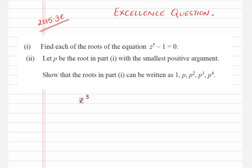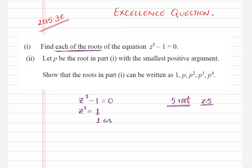So the first part says z to the power of 5 minus 1 equals 0, and we have to find each root. We will have five roots because the highest power of z is 5. We can write it as z⁵ equals 1. Since 1 is a real number, in polar form it will be 1 cis 0 degrees — because cos 0° = 1 and sin 0° = 0.